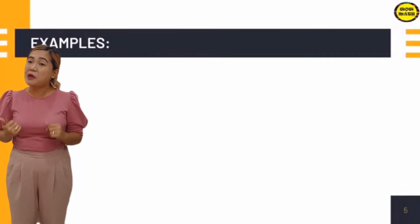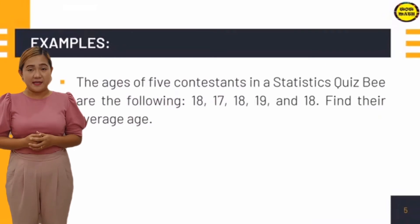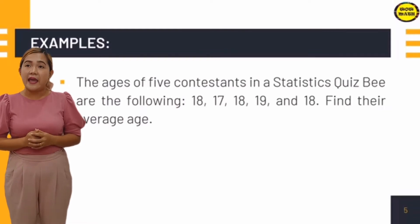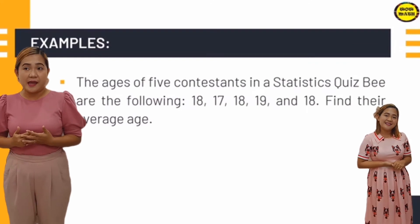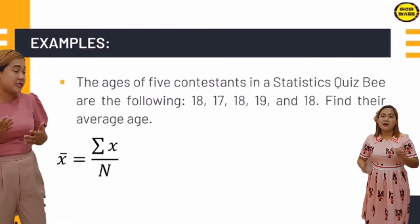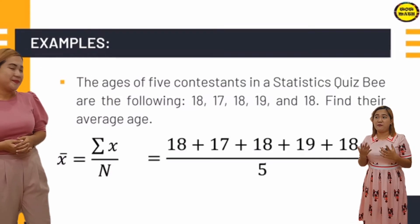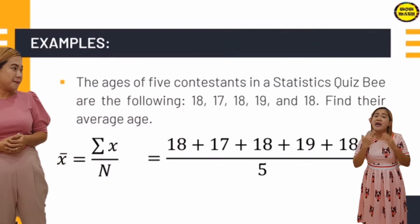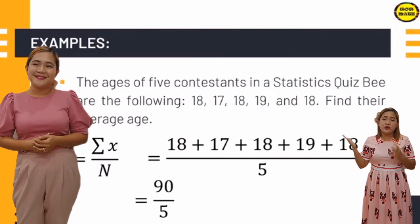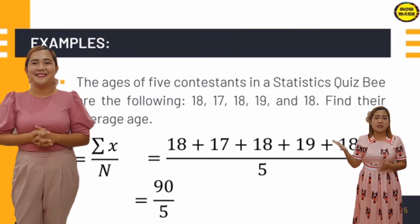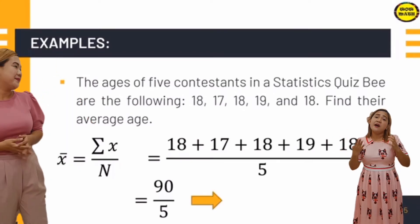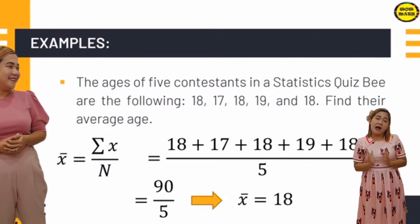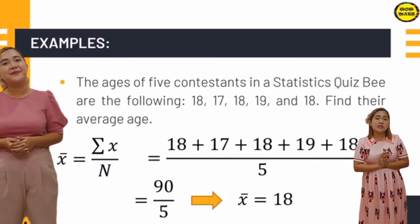Let's try another example. The ages of 5 contestants in a statistics quiz bee are: 18, 17, 18, 19, and 18. We need to find their average age. Ann, can you help? We are going to use the formula: Mean = Σx / n. So 18 + 17 + 18 + 19 + 18 = 90, divided by 5. Because we have 5 scores, our mean — the average age — is 18.